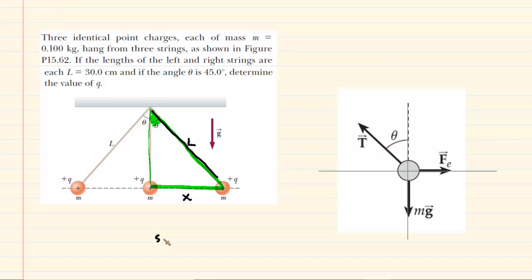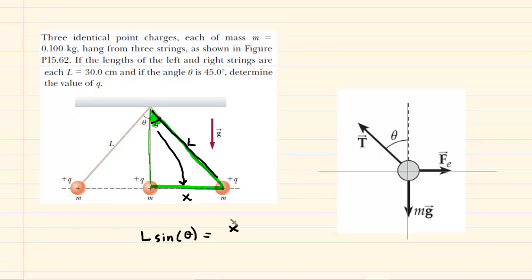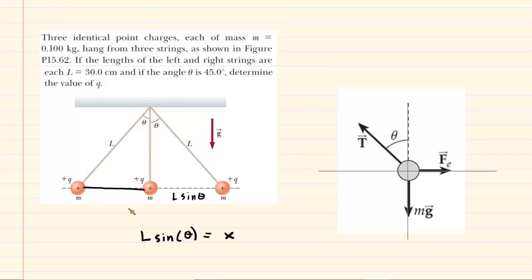From this diagram, the sine of the angle equals the opposite side over the hypotenuse. The side opposite this angle is X, and the hypotenuse is L. Multiplying both sides by L, the Ls cancel on the right-hand side, giving us X equals L sine theta. So we label that distance L sine theta. By a similar line of reasoning, using the symmetry of the picture, the other distance is also equal to L sine theta.